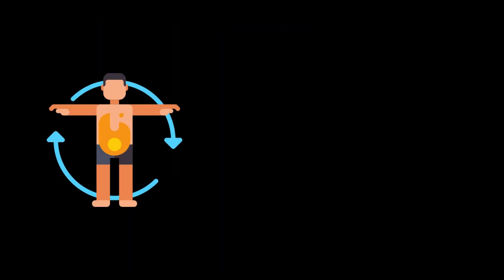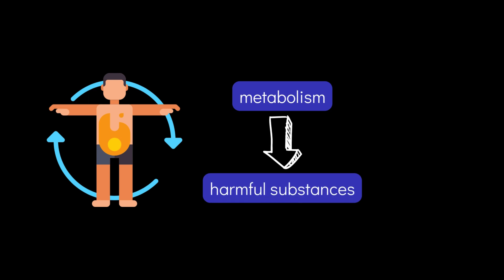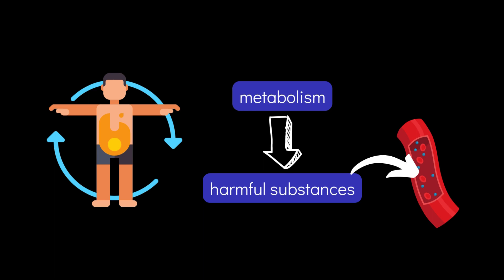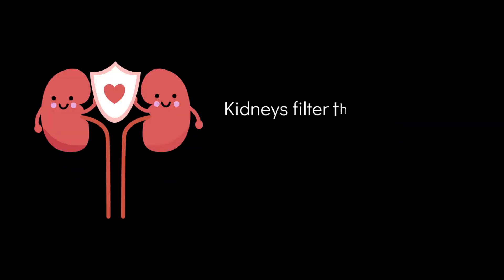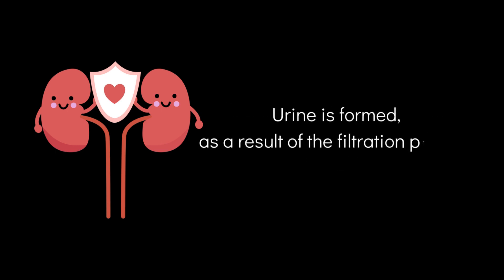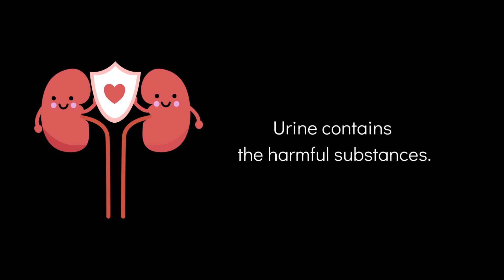Our body produces harmful substances as a result of metabolism. These substances get mixed with our blood. Kidneys filter the blood and remove harmful substances from it. Urine is formed as a result of the filtration process inside the kidneys. Urine contains the harmful substances.